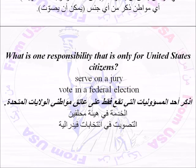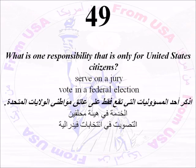Number Forty-Nine: What is one responsibility that is only for United States citizens? There are two: serve on a jury, or vote in a federal election.